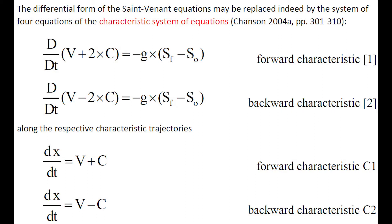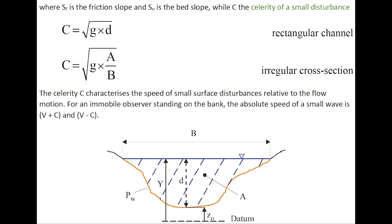The differential form of the Saint-Venant equations may be replaced by the system of four equations of the characteristic system of equations shown below, in which Sf is a friction slope, S0 is a bed slope, and C is the celerity of a small disturbance.